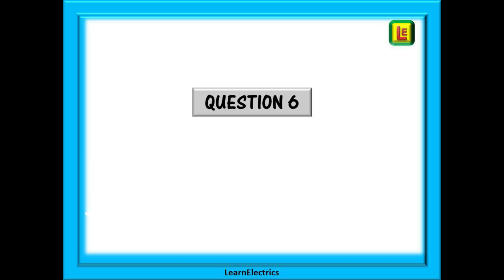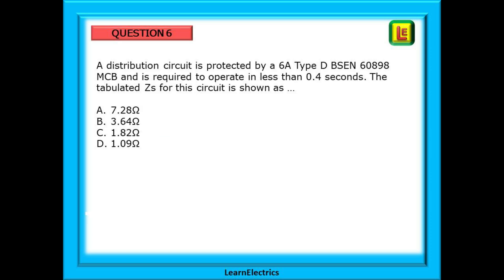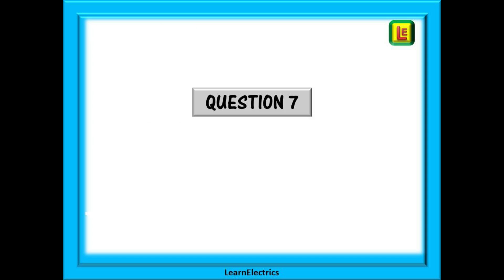Now, question 6. We are asked: A distribution circuit is protected by a 6-amp type D BS EN 60898-MCB and is required to operate in less than 0.4 seconds. The tabulated ZS for this circuit is shown as... Pause the video and answer the question. You should choose answer C, 1.82 ohms.